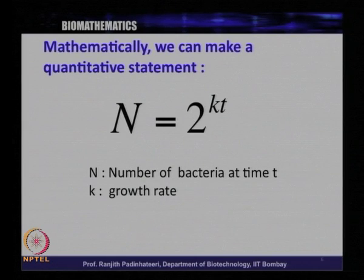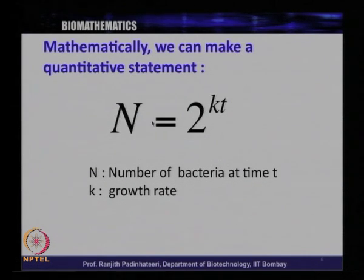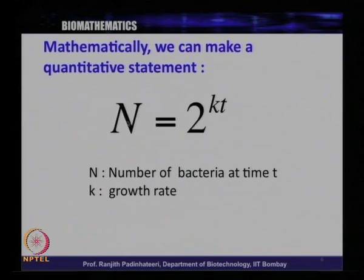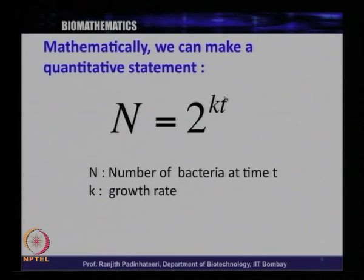What does this equation convey? This equation essentially tells how n — which is the number of bacteria at a particular time t — how many bacteria are there in this petri dish at a particular time t is what this is describing.